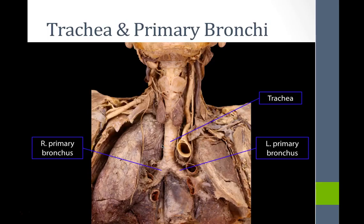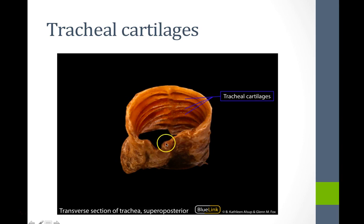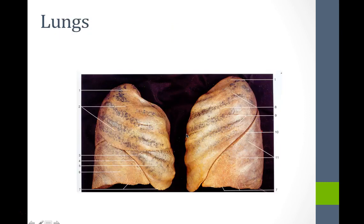In cadaveric images, we can see the trachea continuing down into the right and left primary bronchi, with the C-shaped hyaline cartilage rings clearly visible and the trachealis muscle connecting the two sides posteriorly.